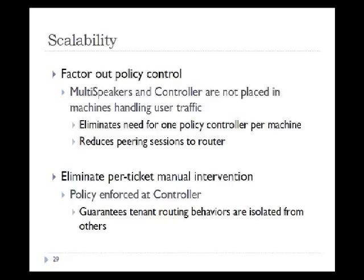In terms of scalability, BGP-Sharp achieves it at two levels. At the system level, it factors out policy control — the multi-speaker and controller are not placed in machines handling user traffic, eliminating the need for one policy controller per machine and reducing the number of peering sessions needed to the router. At the human resource level, BGP-Sharp eliminates the need for a dedicated admin per ticket by enforcing policy at the controller, so only a few admins are needed to configure policy for all tenants, also guaranteeing that tenant routing behaviors are isolated from others.